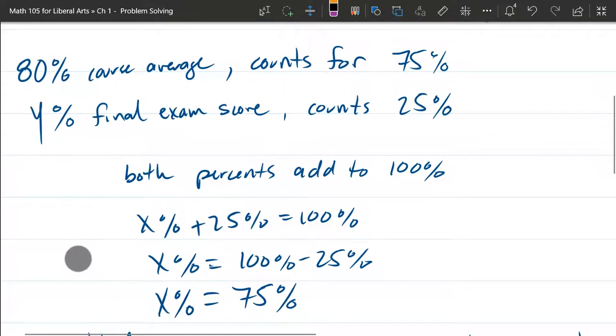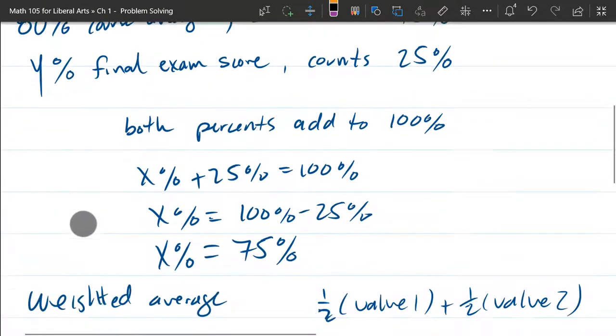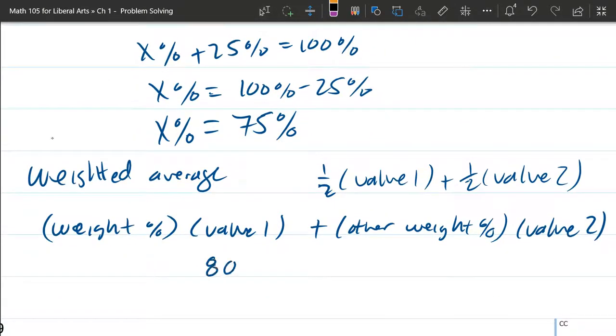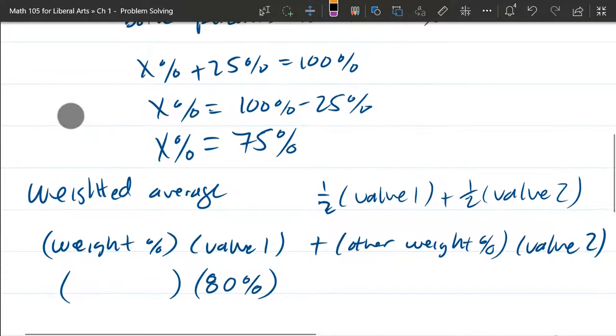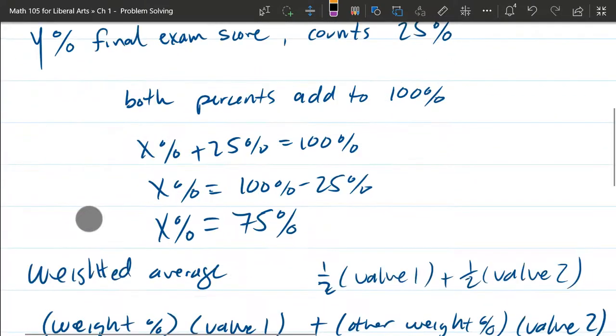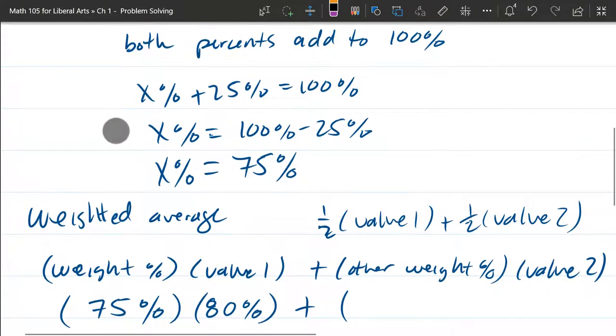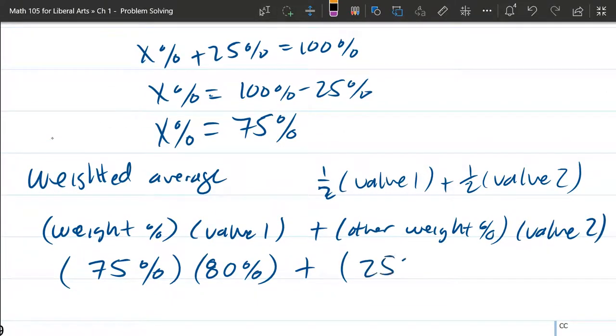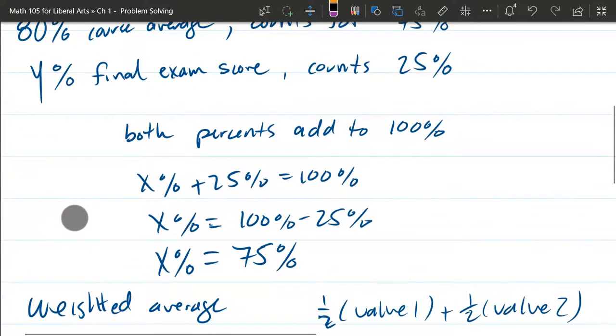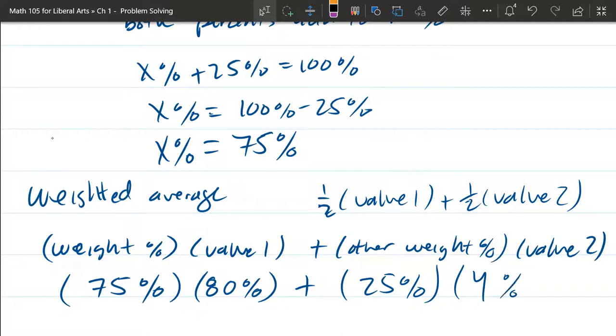I just wrote down the course average first as 80%. So our value 1 is 80%. How much does the course count? The course counts for 75%. So that's the weight and the score, or the value on that. Now the other weight percent is 25%. And the other value, we don't know. So I'm going to leave it as just Y percent.